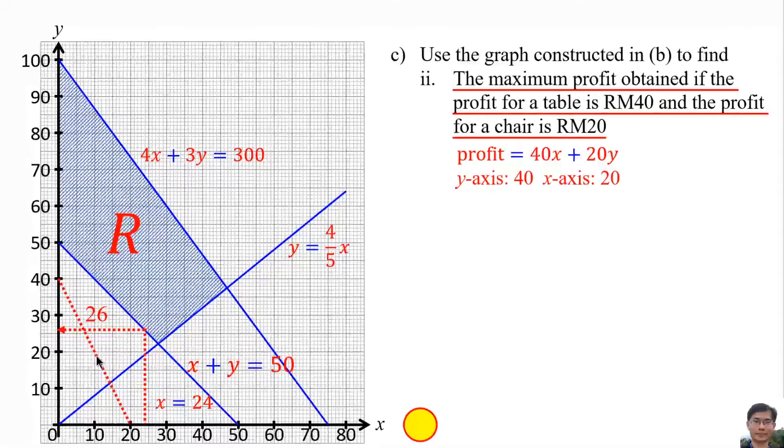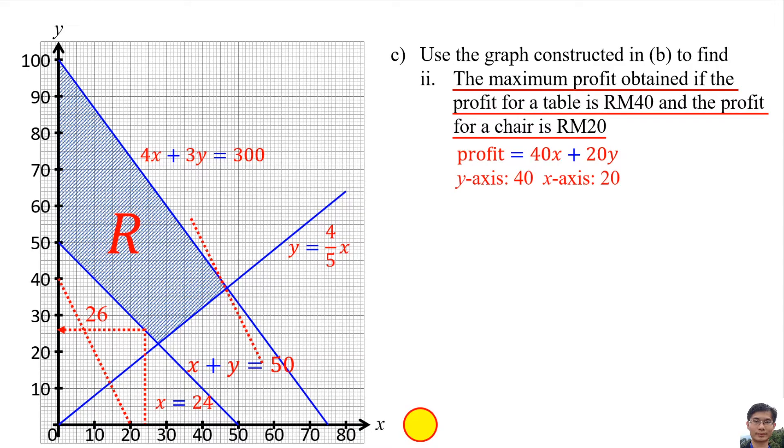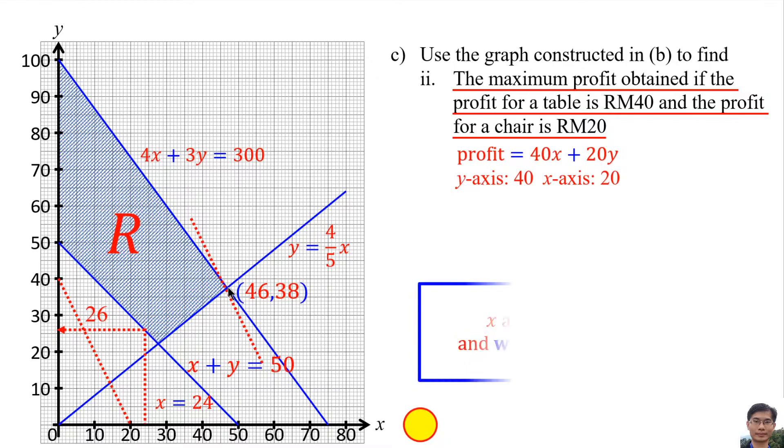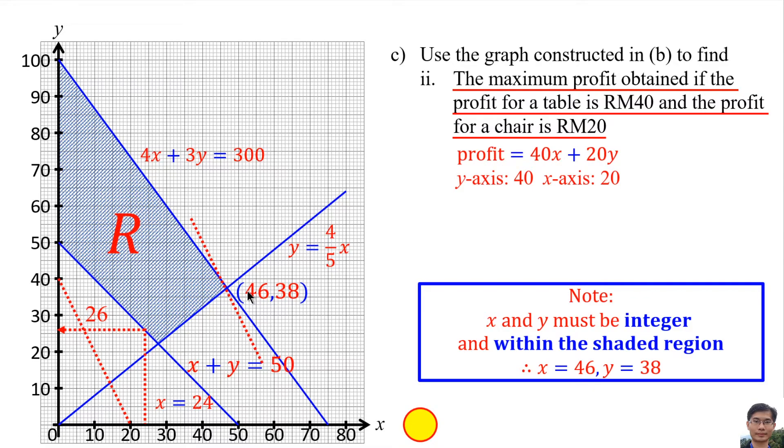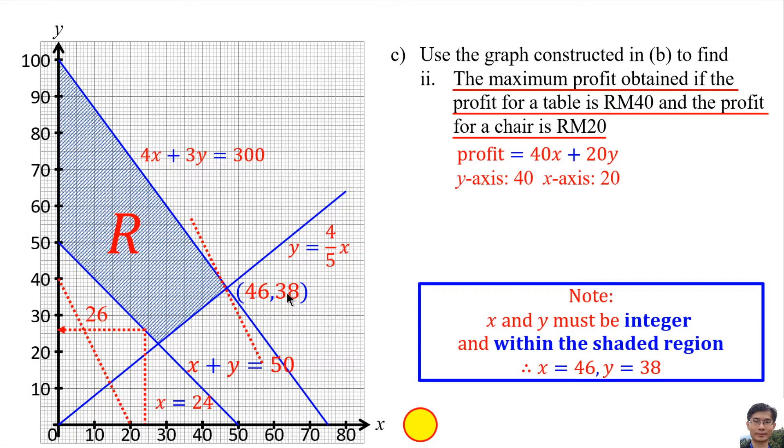After that, move the line to the right until it hits the farthest points of the shaded region. Then we find the coordinates of the intersection point. However, we must make sure that the x and y must be integer and within the shaded region. So we pick x equals 46, y equals 38. The exact coordinate of the intersection point is 46 point something, but the x value must be integer, so we pick 46. So when x is 46, y is 38. So the maximum profit is 40 times 46 plus 20 times 38 equals 2600 ringgit.